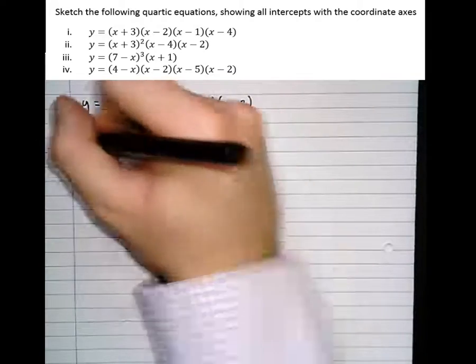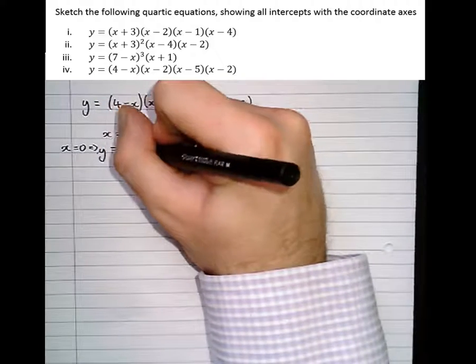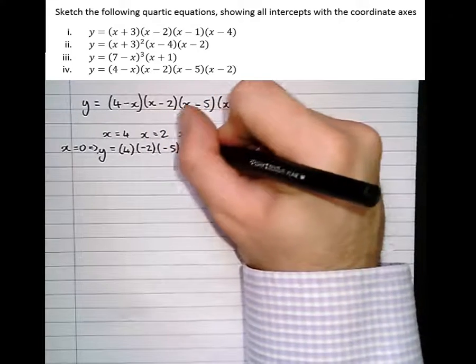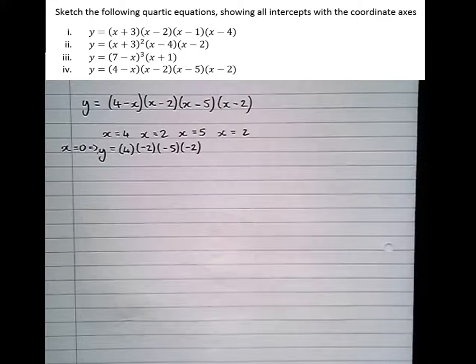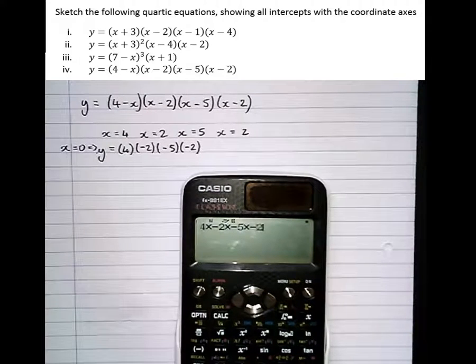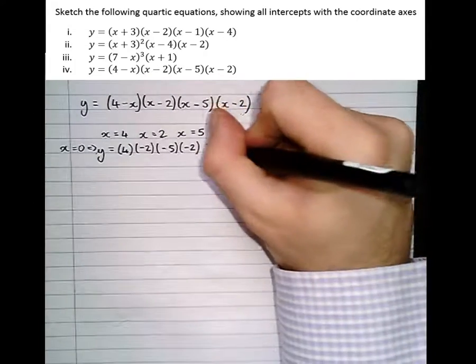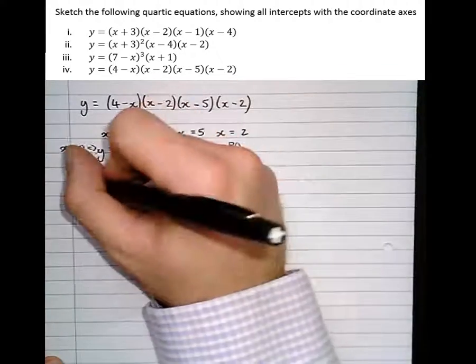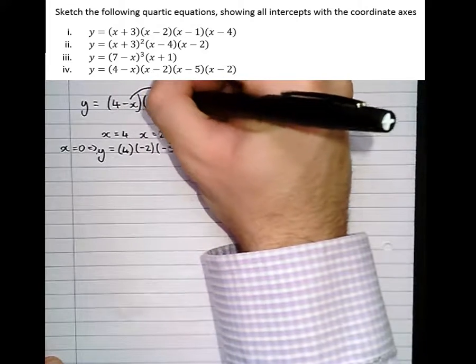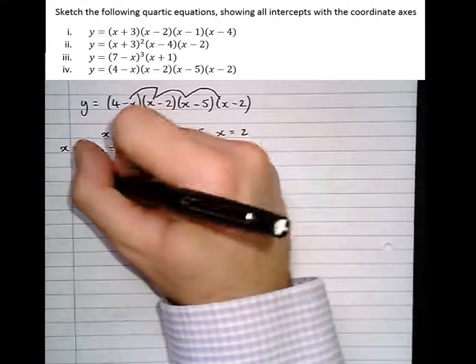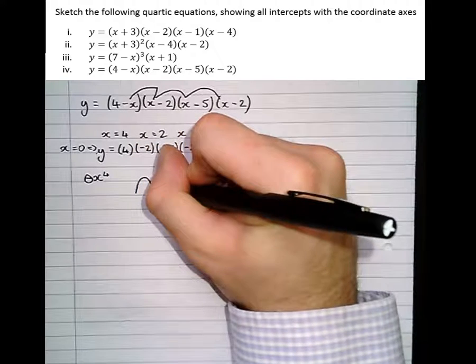The y-intercept is when x equals 0. So y equals (4 - 0)(0 - 2)(0 - 5)(0 - 2). We'll type that in the calculator: 4 times minus 2 times minus 5 times minus 2, which gives minus 80. So y equals minus 80. And then multiplying out all the x terms: minus x times x times x times x gives minus x to the power of 4, a negative quartic, which means it's going to look something like that.